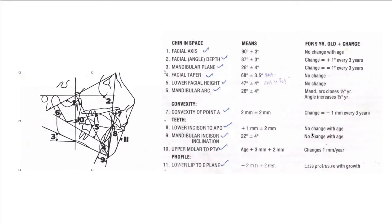The lower lip to E-line (Ricketts E-line) is minus two millimeters, becoming less protrusive with growth.